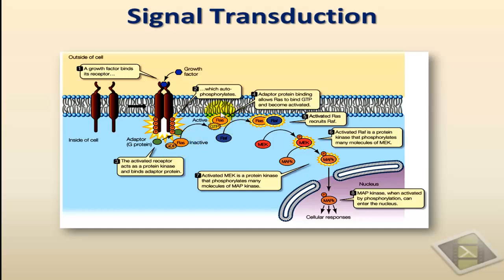The first one is RAS. RAS is a protein that is involved in a type of cancer known as sarcoma. RAS comes from RAT sarcoma — that's when it was first discovered. Any mutation in this system might lead to the activation of RAS without the activation of the receptor.